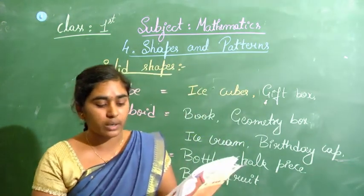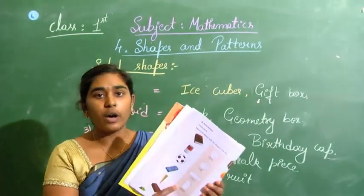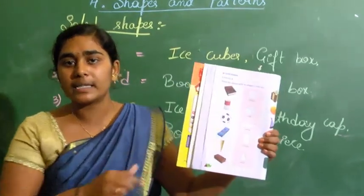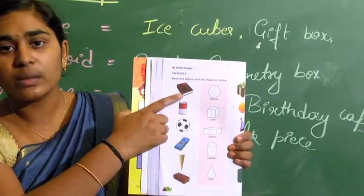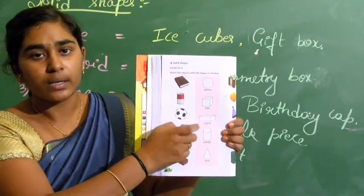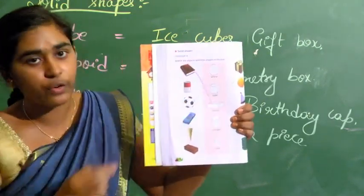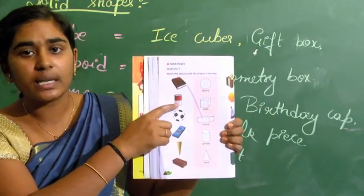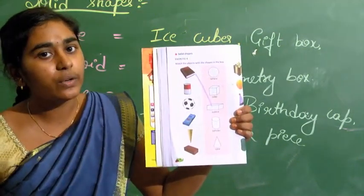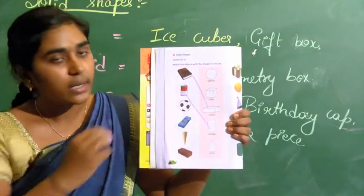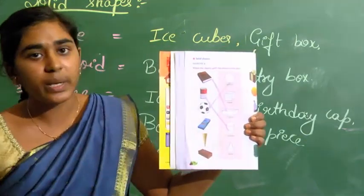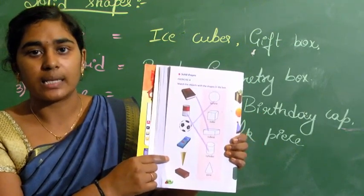Now coming to your exercise — Exercise 4. You need to observe objects and match them to the correct solid shape. For example, a book is similar to a cuboid, a coke tin or Pepsi can is similar to a cylinder, and a ball is an example of a sphere.